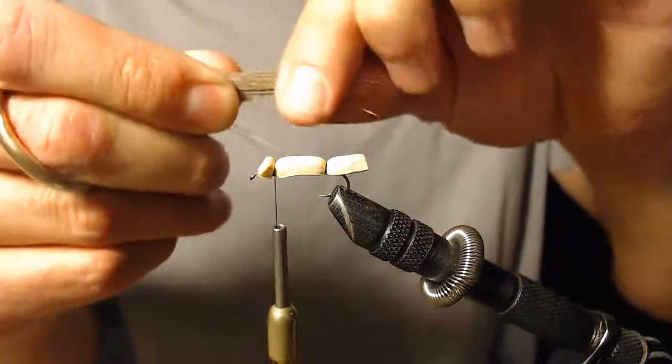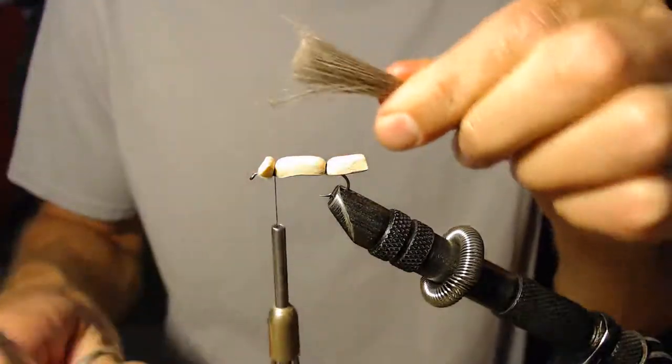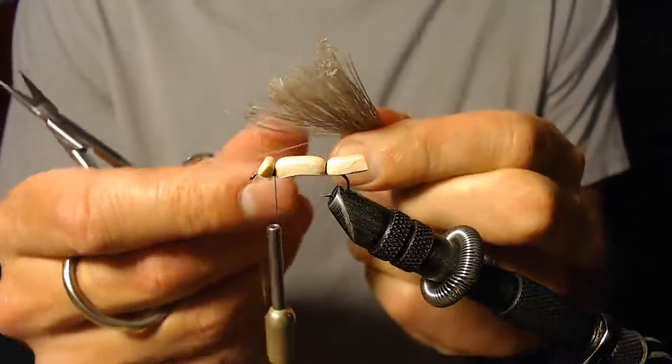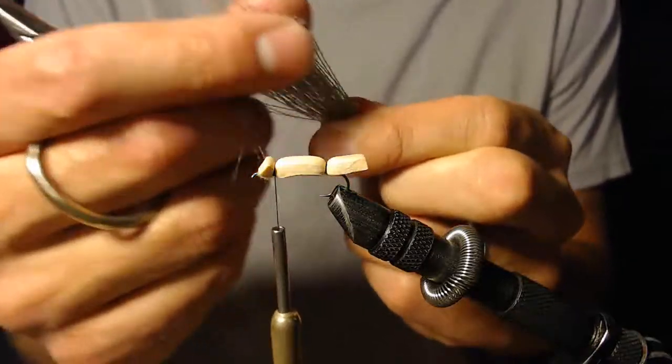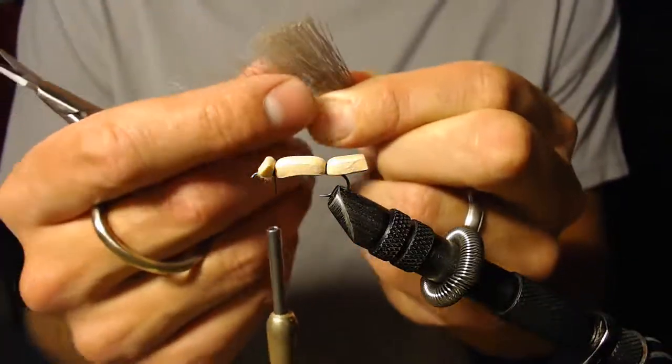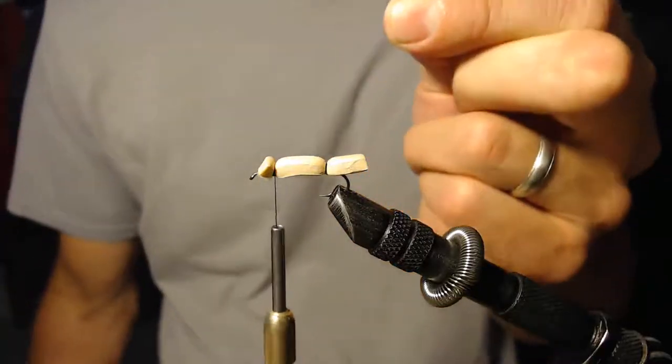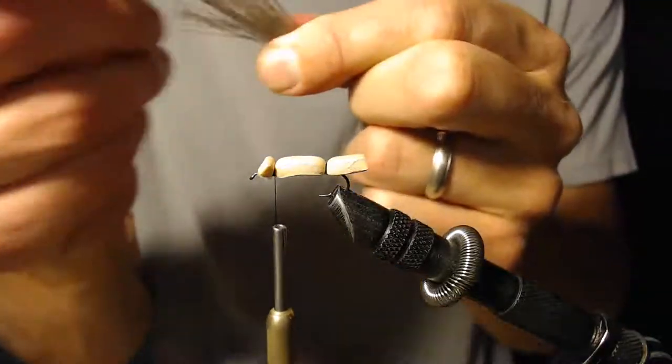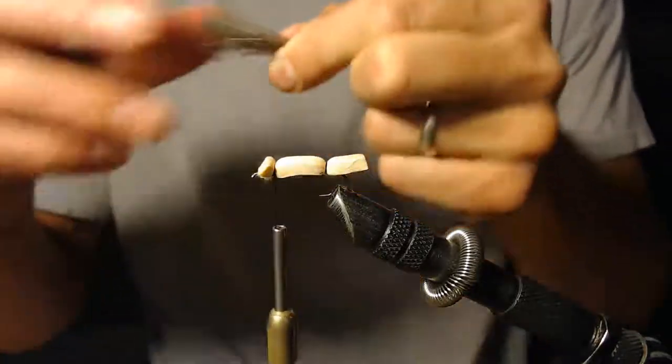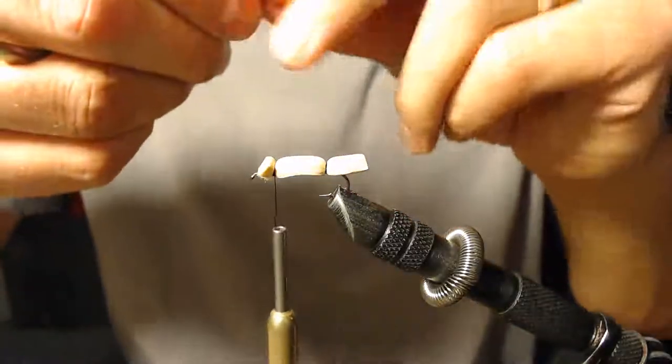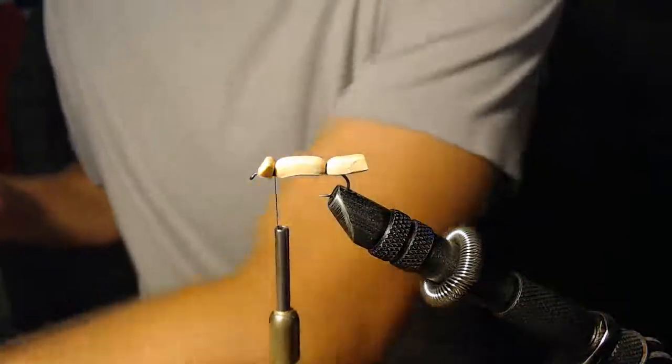A lot of times what you want to do is when you cut that, you'll notice there's some pretty fuzzy stuff in there. You just kind of want to hold the tips of the elk hair and pull out a lot of that fuzzy stuff, a lot of the fluffier elk hair you're not going to want. You want those nice stronger fibers. Once you get that, then I'm going to put it in the hair stacker.